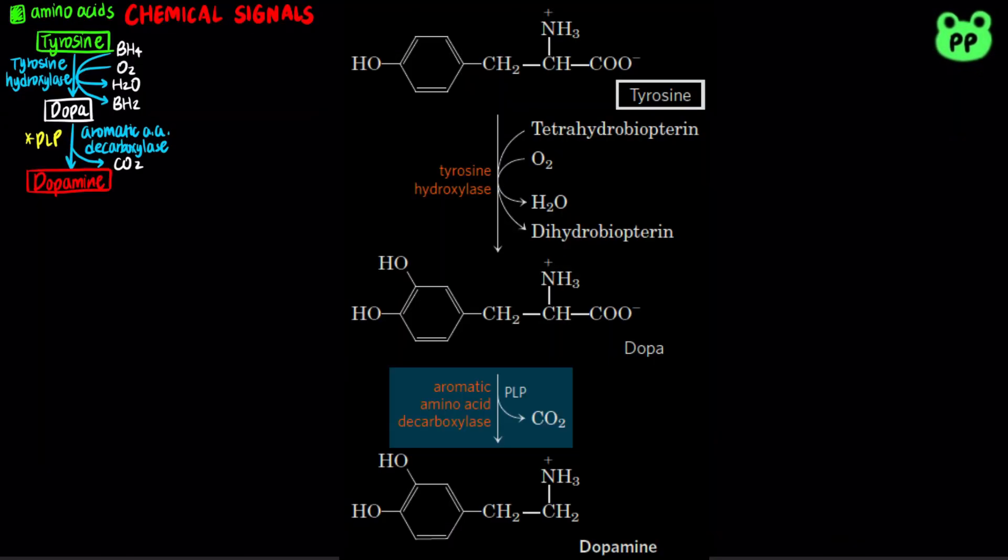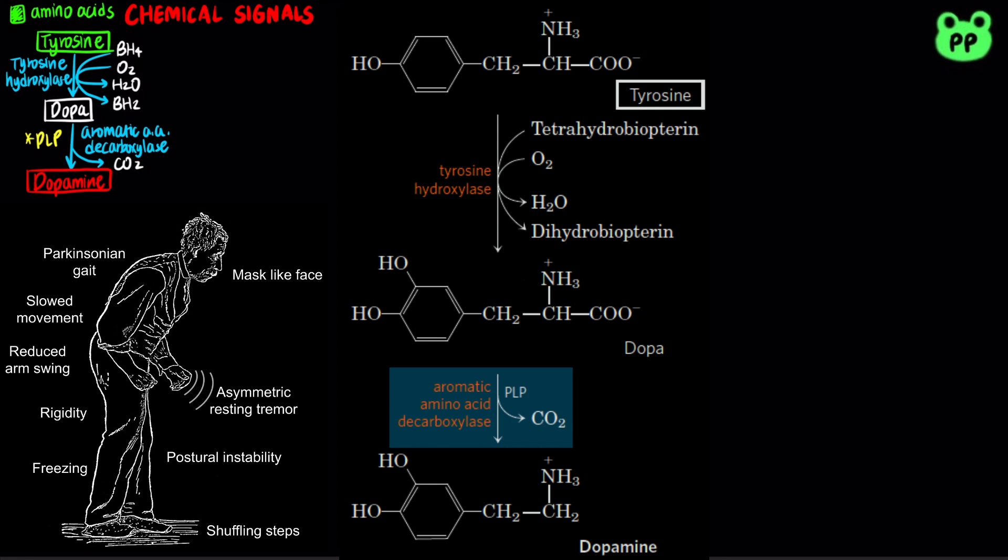Dopamine is a neurotransmitter that plays a major role in our brain's reward system as well as motor control. The neurological disorder Parkinson's disease, which affects the motor system, is associated with an underproduction of dopamine and has traditionally been treated by administering L-DOPA.